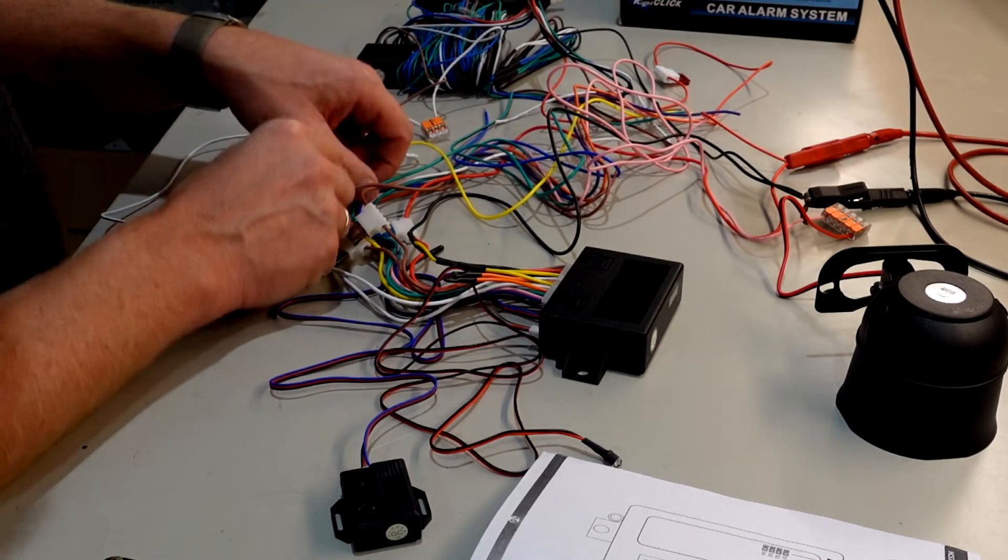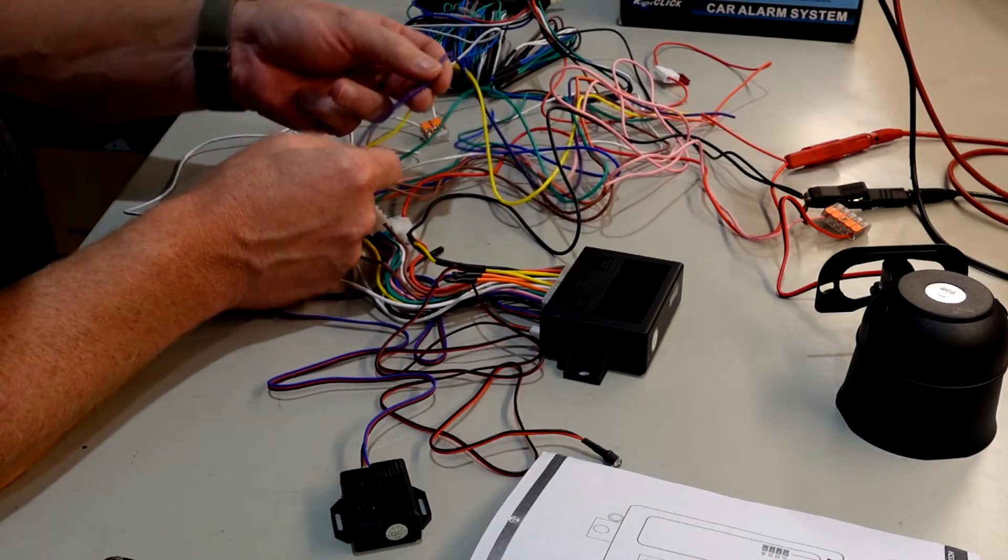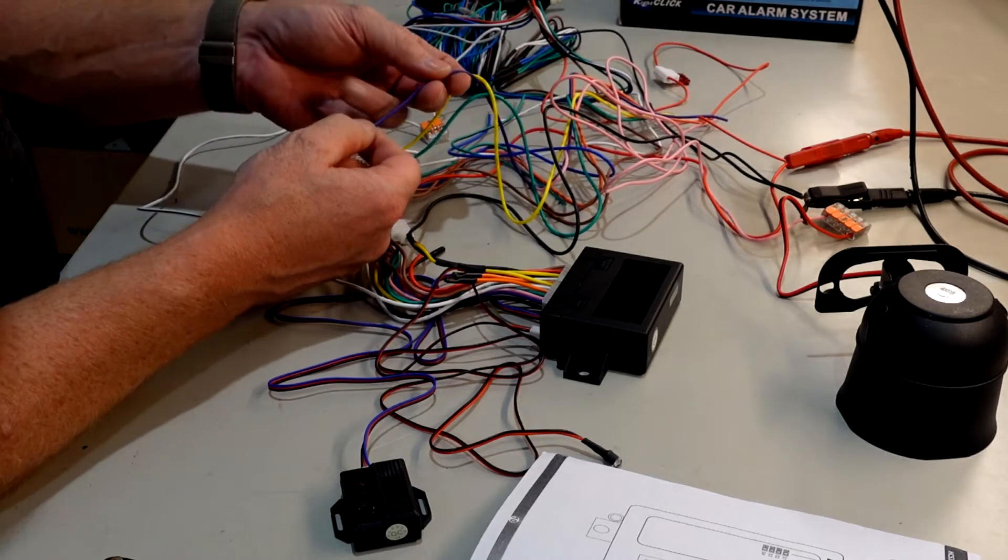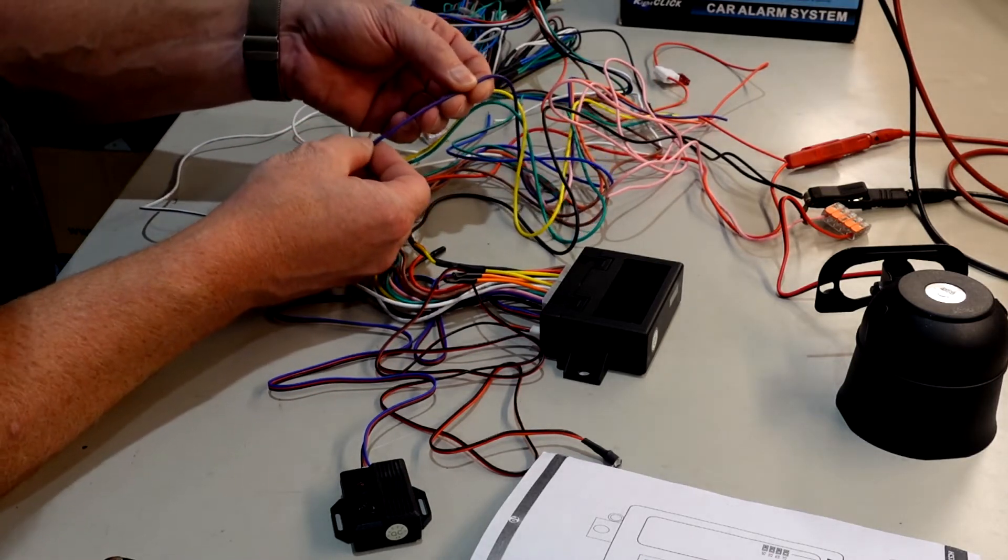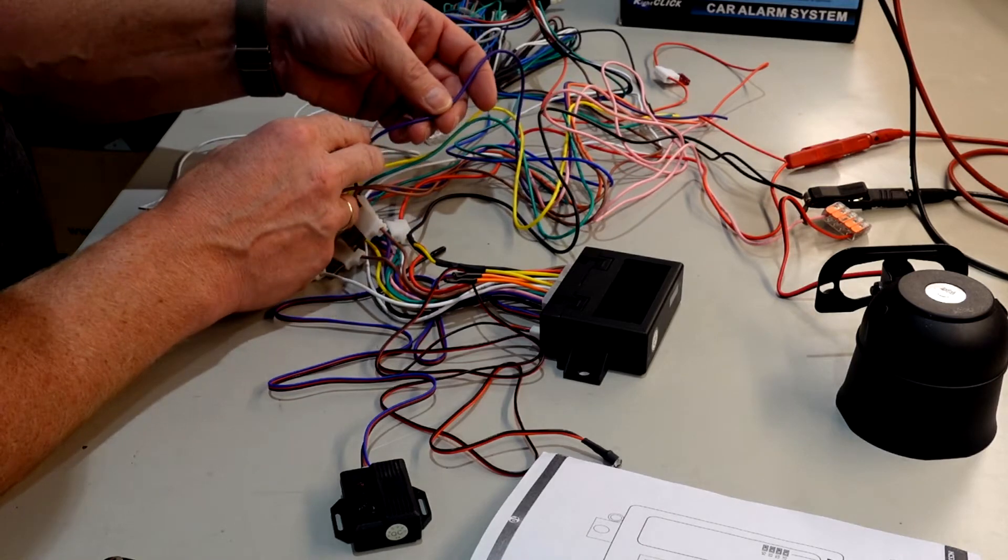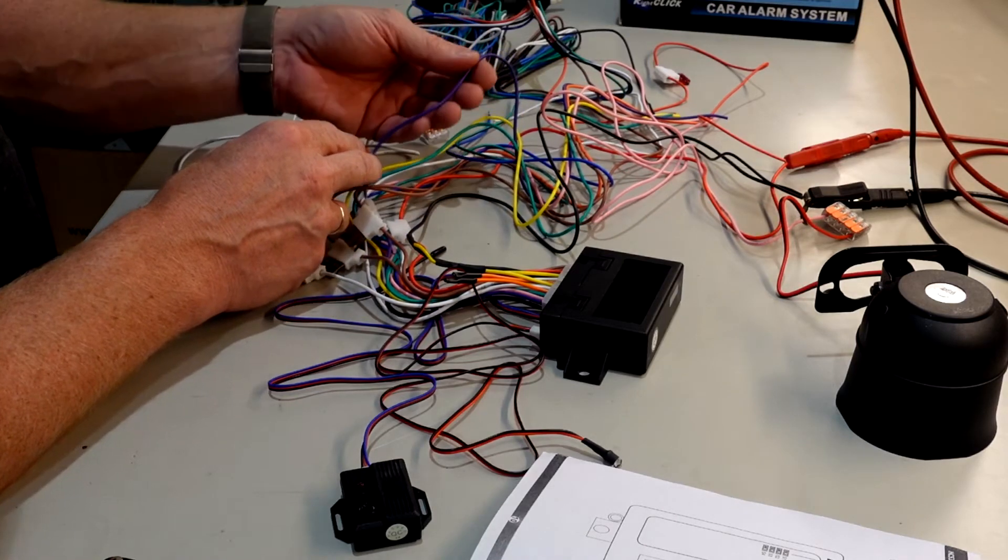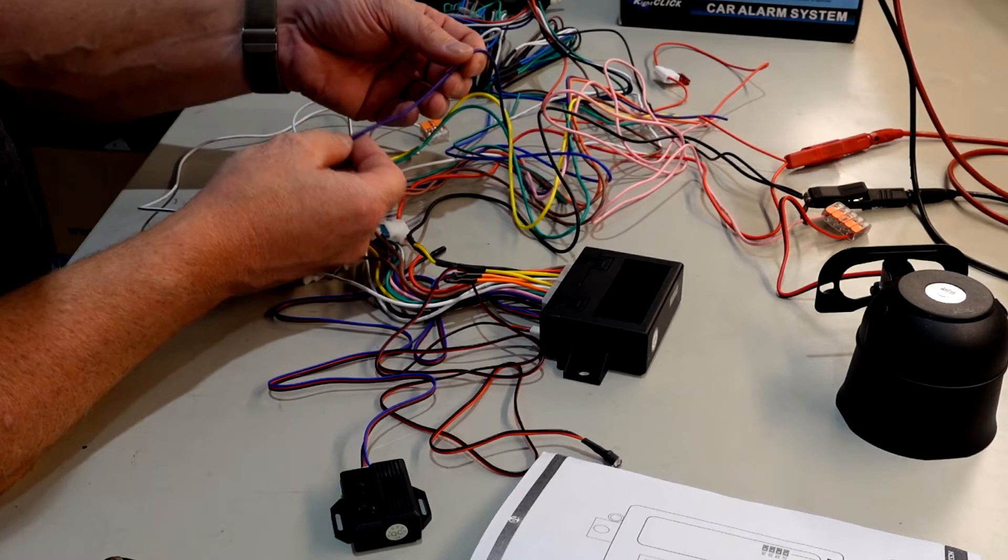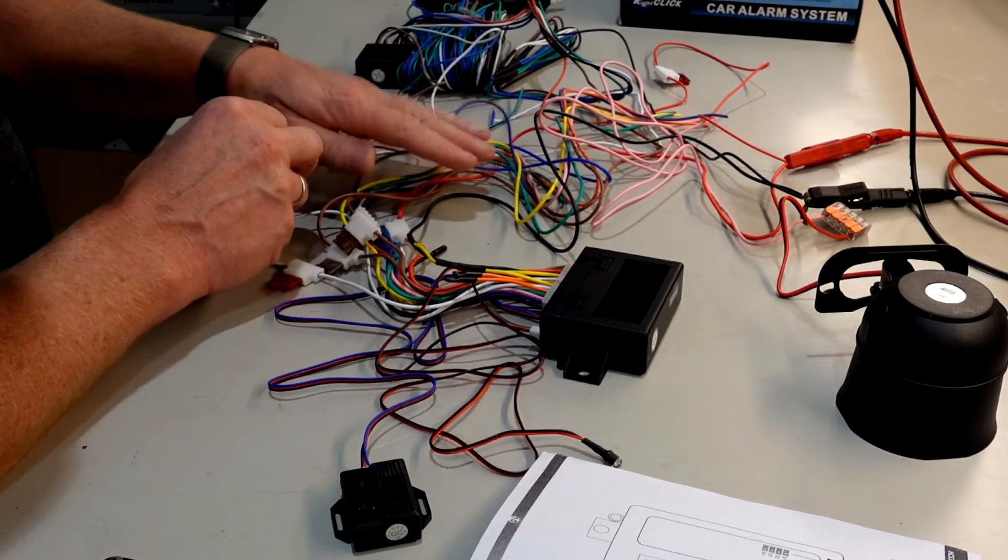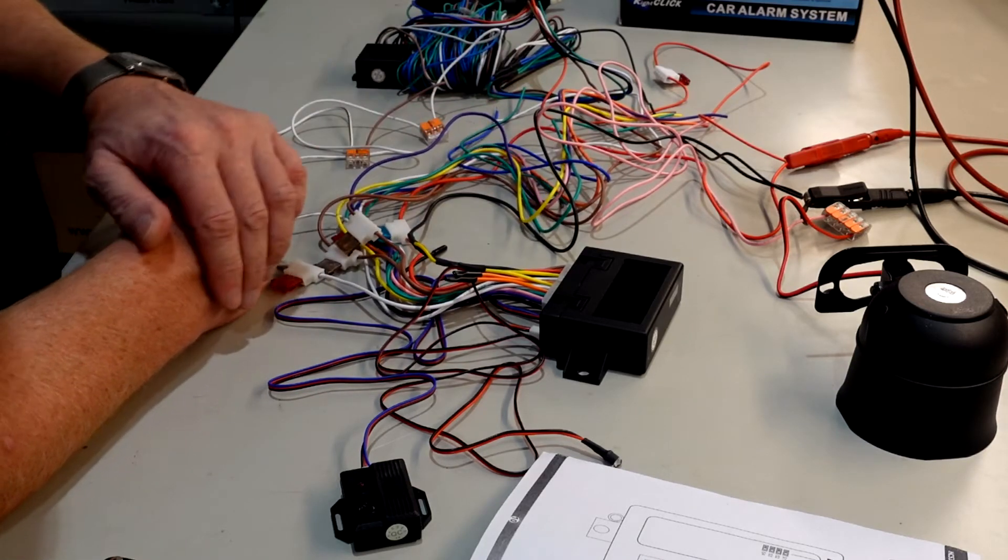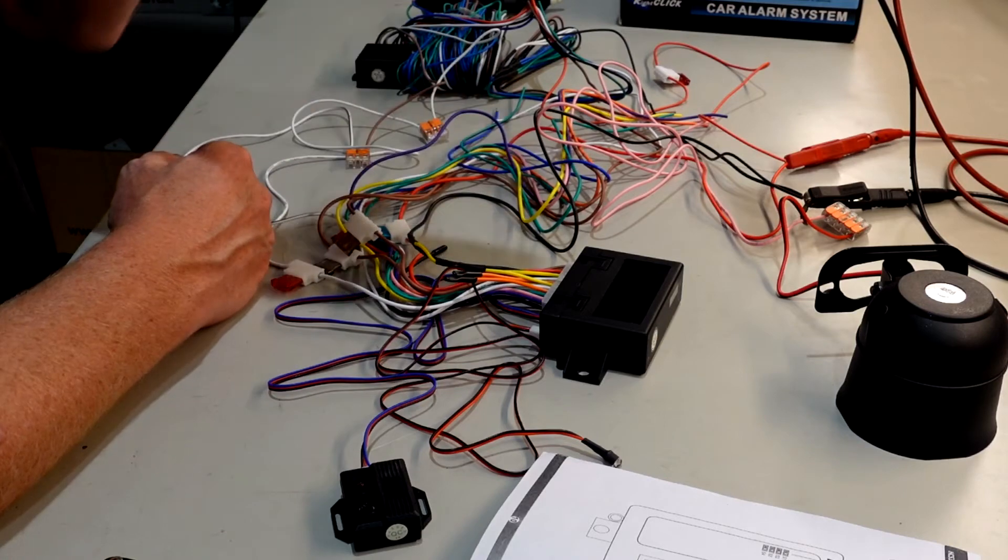And then you have the violet one, which is the last one. The violet one is what they call a comfort function. It will raise the window if you have electrical window. It's a little more complicated to wire it up, it's a nice function when it's okay because when you arm the alarm the window will raise and close.